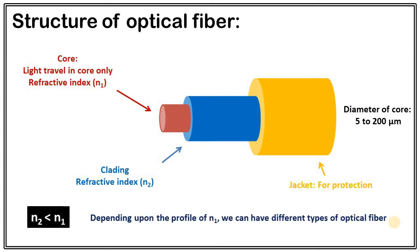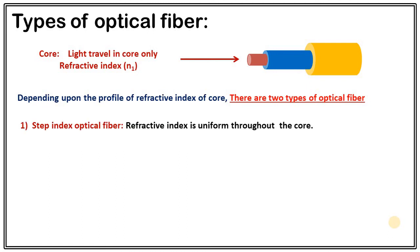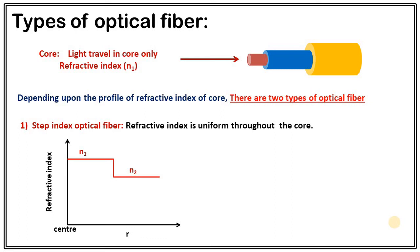Depending upon the refractive index profile of the core, we have different types of optical fiber. There are two types. The first is step index optical fiber, where the refractive index is uniform throughout the core and changes abruptly at the core-cladding interface. If you plot refractive index as a function of distance from the center of the core, you get a step-down at the interface — this is why it is called step index optical fiber. Step index optical fiber is of two subtypes: multi-mode and single-mode.